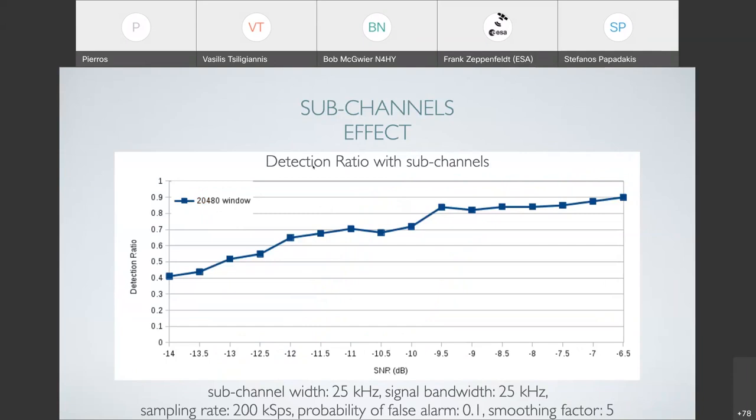Now, in the case that we split the sample spectrum into sub channels, the performance is quite worse. As you can see, in order to get 90% detection, we lose almost 10 dBs. We have some thoughts of why this is happening, but we have not managed to do some testing in order to be able to identify the reason for that. This reflects back to the first results that I showed you. We need to have a quite higher sampling rate than the bandwidth of the signal in order to have good results.